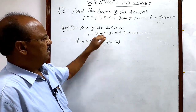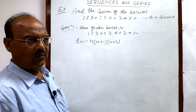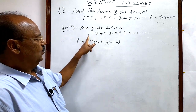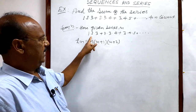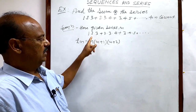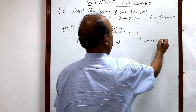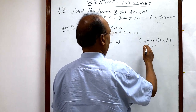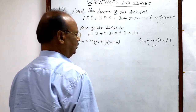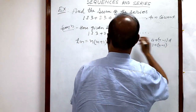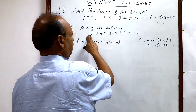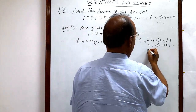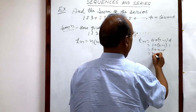Either the nth term can be written by observation, or you can use a formula. This is an AP with first term a = 1 and common difference d = 1. Using the formula Tₙ = a + (n−1)d, with a = 1 and d = 1, you get 1 + (n−1)·1 = n. So the first factor is n.